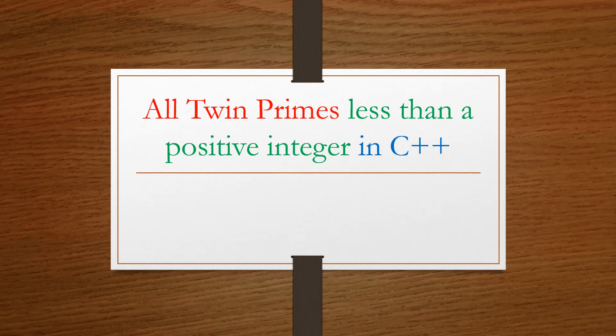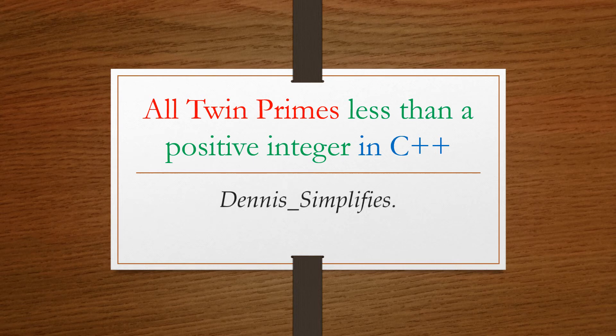Hello friends, welcome to Dennis Simplifies. In this video, we are going to list all twin primes that are less than a positive integer n in C++. But as usual, the algorithm first and then the code. So let's simplify.